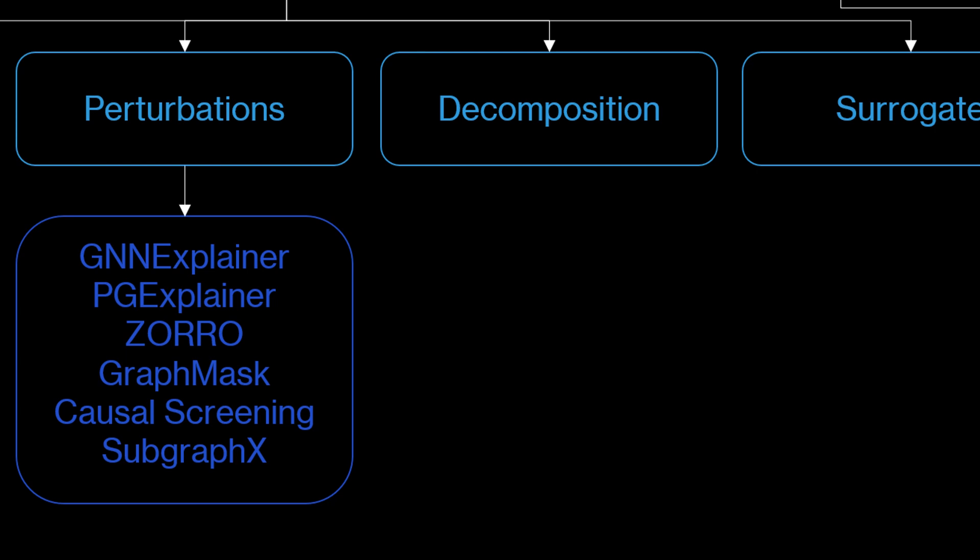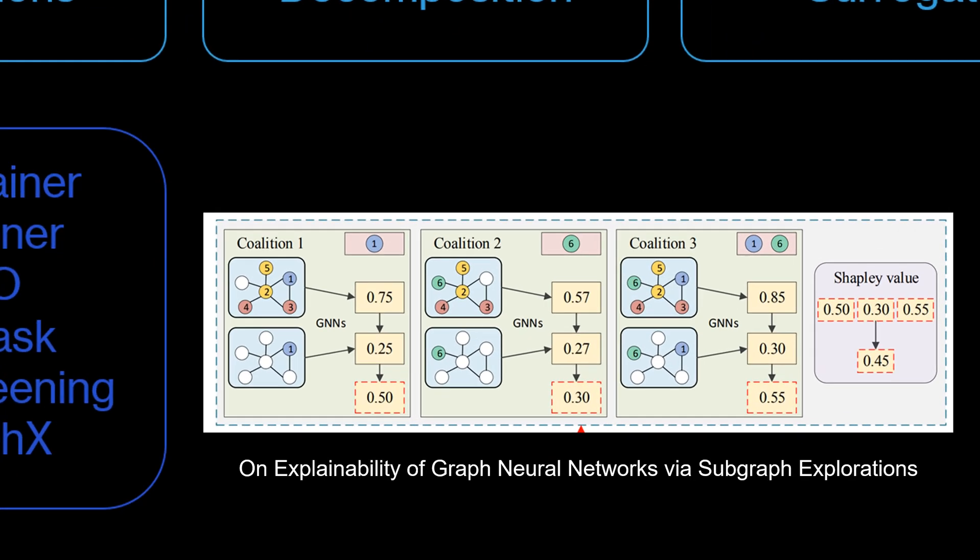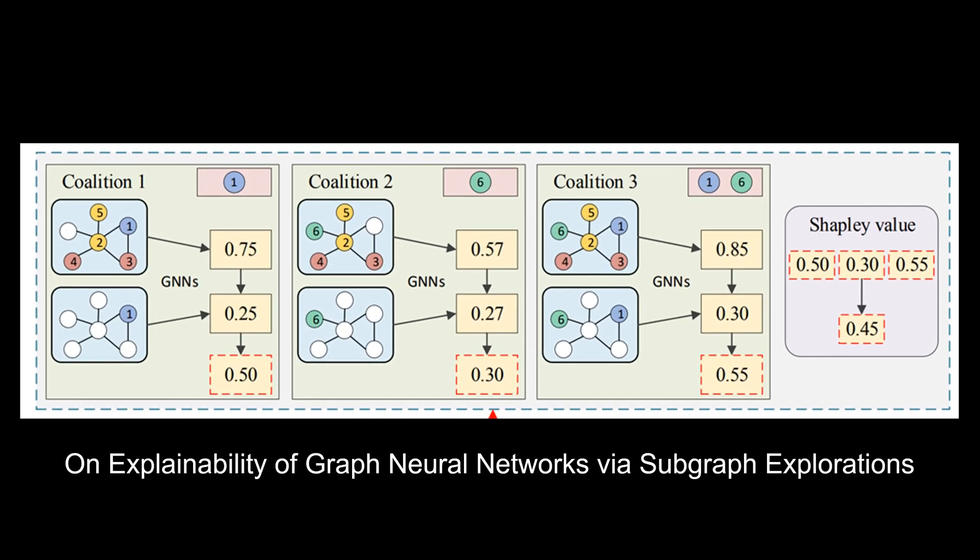Now how do you perturb a graph? This can be done by for example masking elements out and that's the basis for all of the methods in this branch. They simply remove parts of the graph and then check how the predictions of the model change. Later we will have a closer look at the GNN explainer. This example shows subgraph X which samples many different subgraphs, analyzes the changes in the model predictions and combines them to assign a contribution to each node and edge. This approach is based on Shapley values.